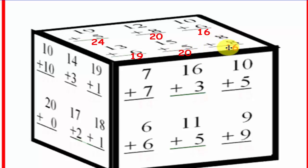Let's try this side of the cube. Here we have 10 plus 10, 20. 14 plus 3, 17. 19 plus 1 is 20. 20 plus 0, easy one, that's 20. 17 plus 2 is equal to 19, and 18 plus 1 is equal to 19 again.